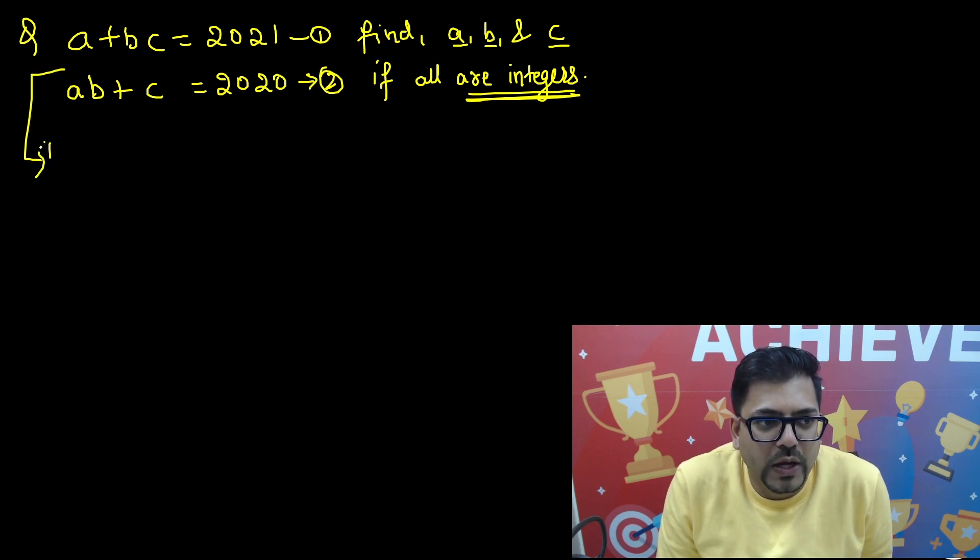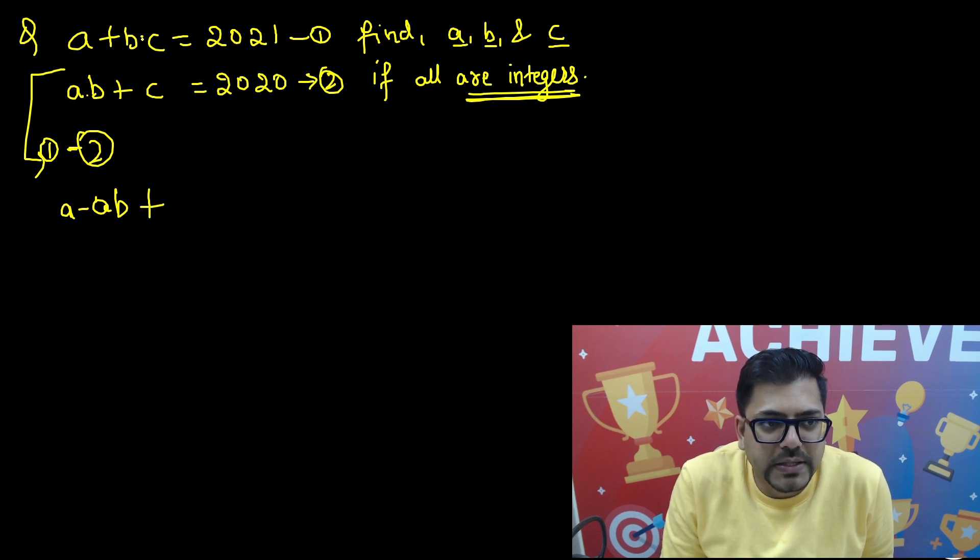Let's try it out. A simple thing we can see is that we can subtract both of them. Although I don't know what will happen, let's try. There is no other way out. So if I do equation 1 minus equation 2, what I will get? 2021 minus 2020.